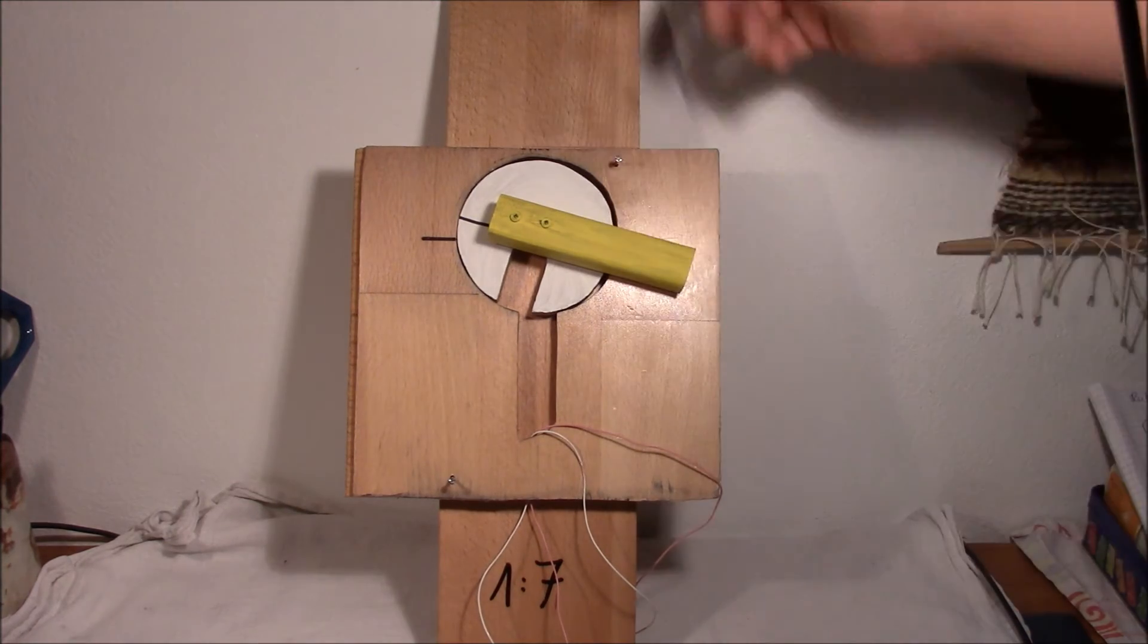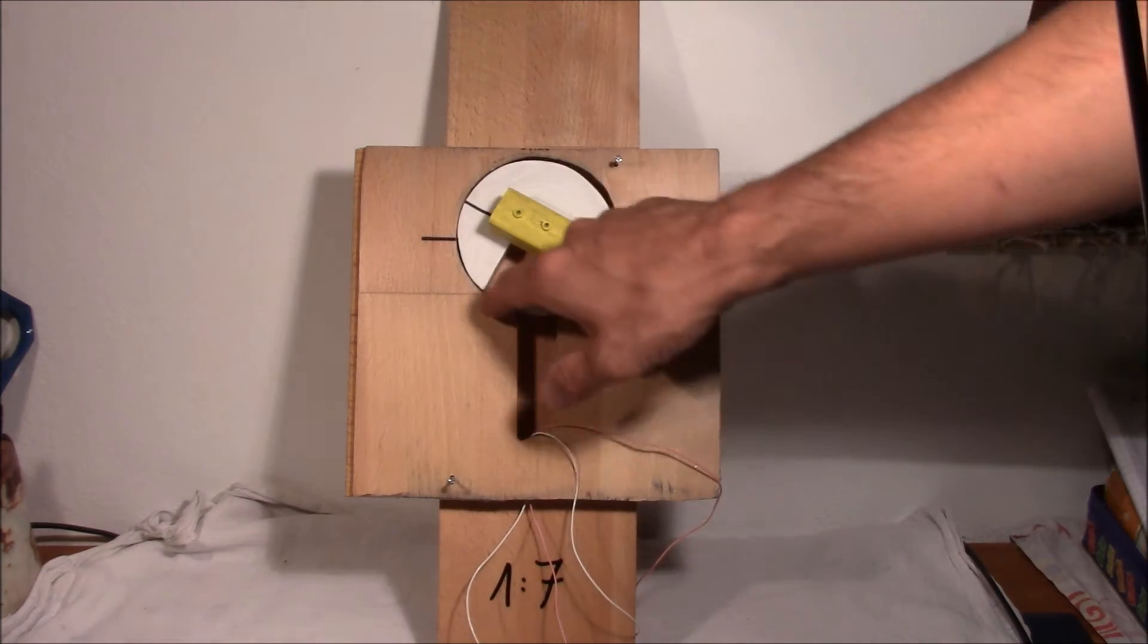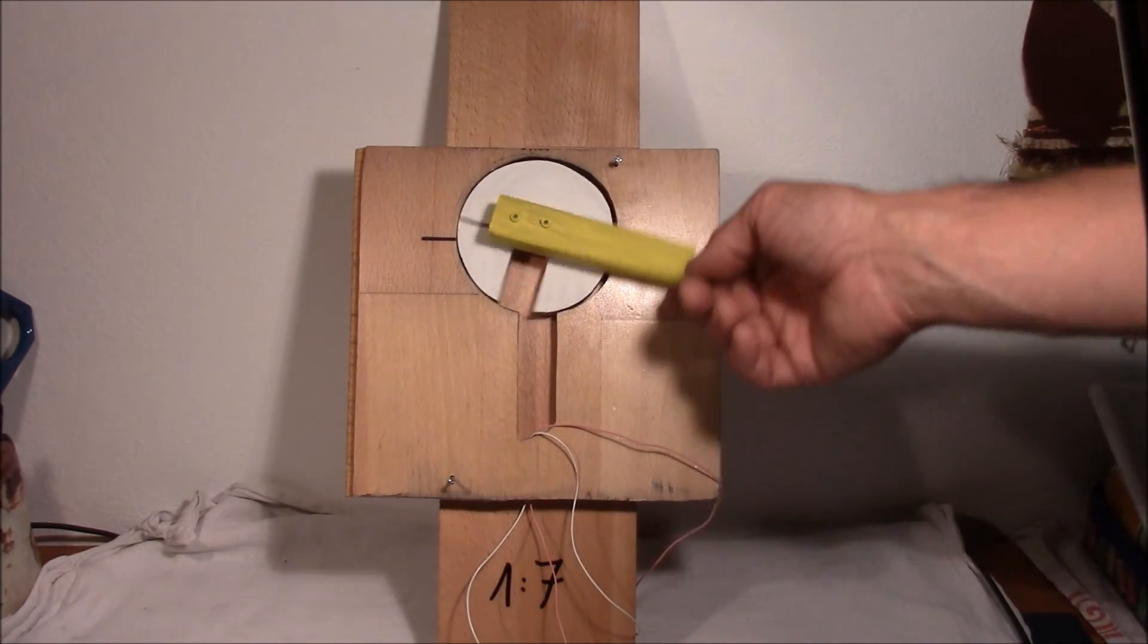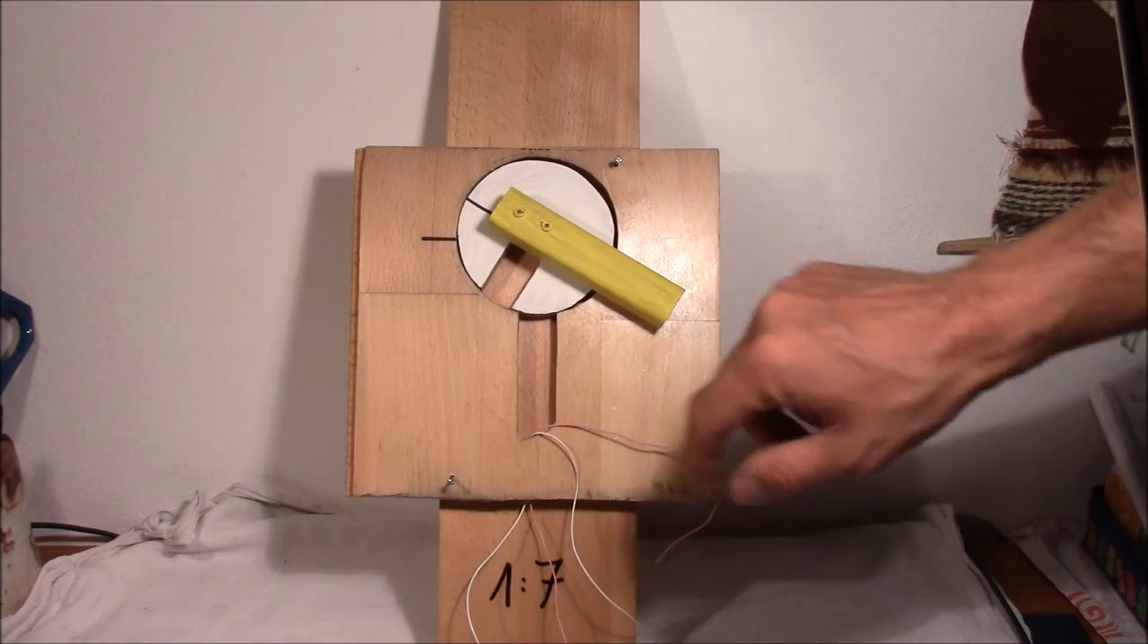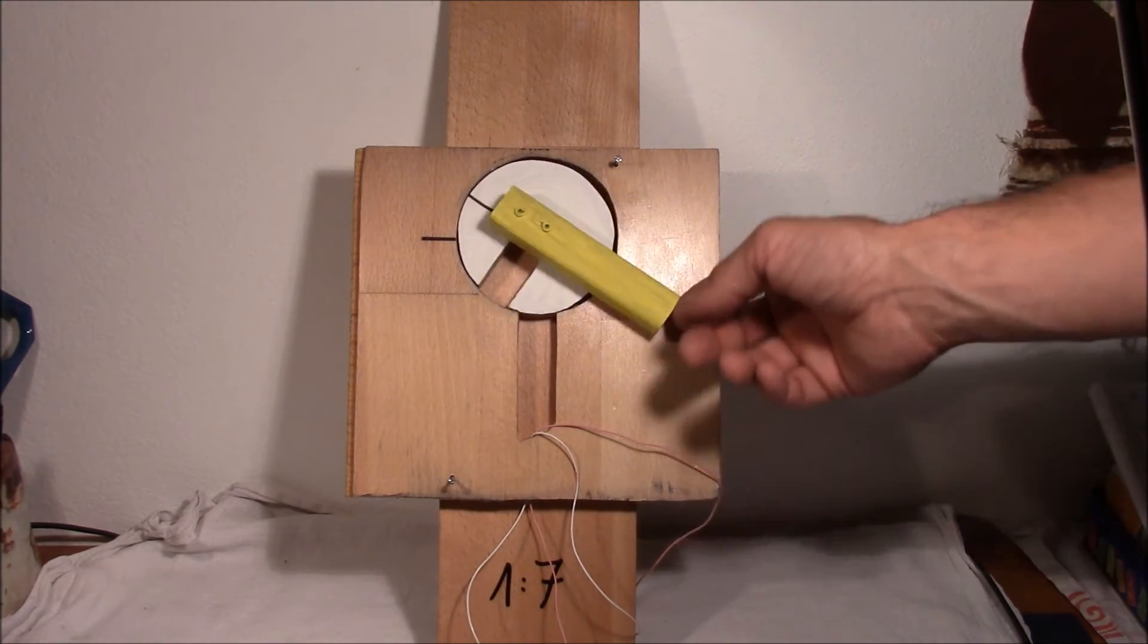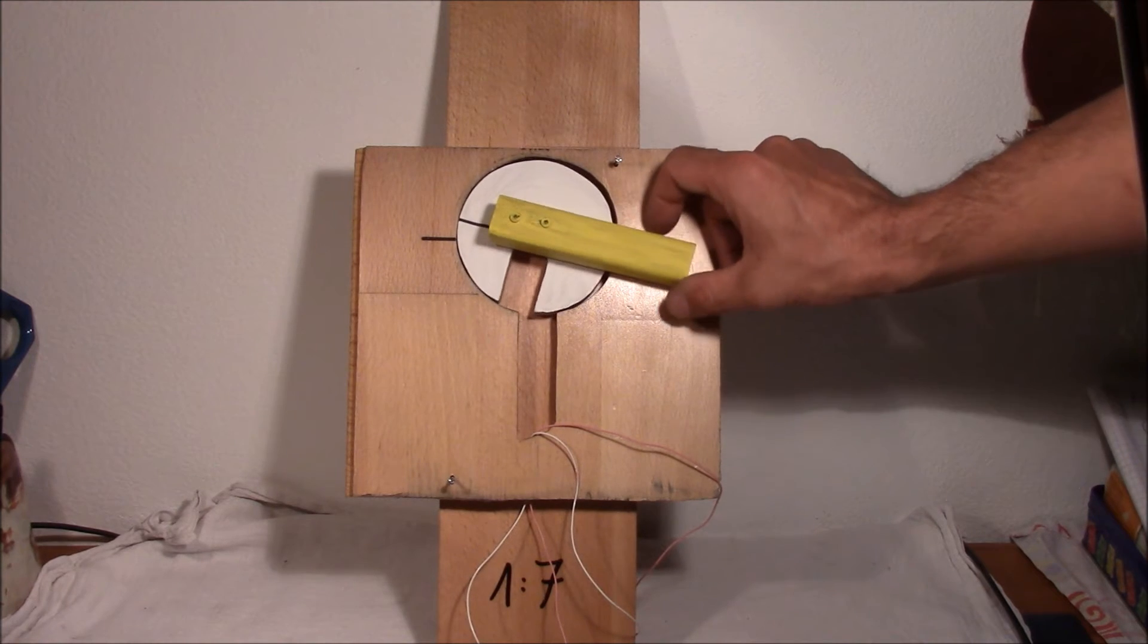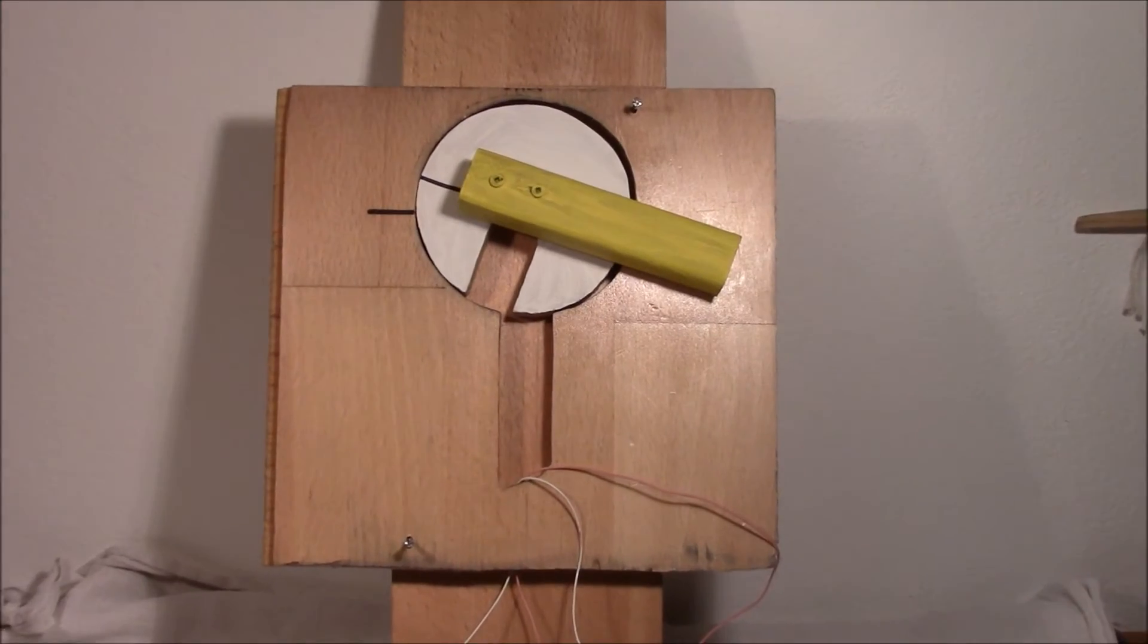And then I of course took a saw and tried to, again, precisely as possible to saw the contours. And as you can see, it's attached to another board with a nail here at the center so that I can rotate the plug. And that should be the tension wrench. So let's start with a demonstration.